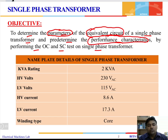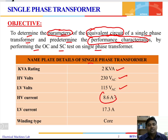These are the two basic objectives of this particular test. We are going to use a single phase transformer whose kVA rating is 2 kVA, high voltage side is 230 volts and low voltage side is 115 volts. The high voltage current is 8.6 ampere, which is the full load current on the high voltage side, and low voltage current is 17.3 ampere. The transformer is of core type.